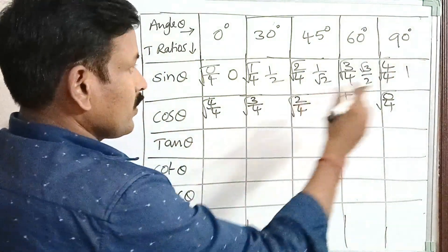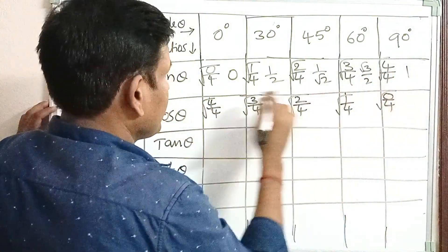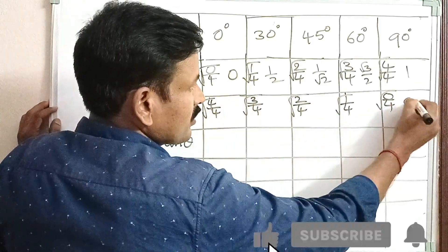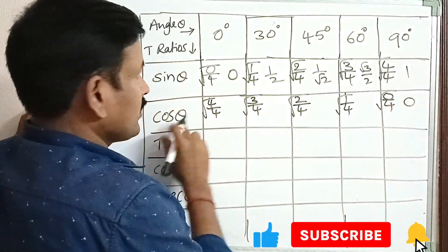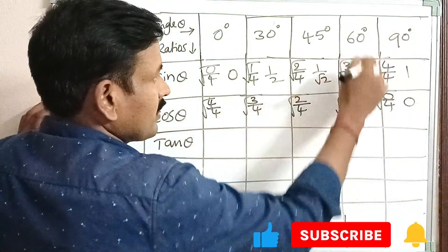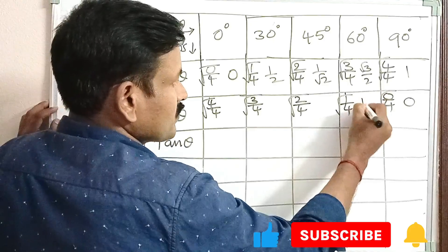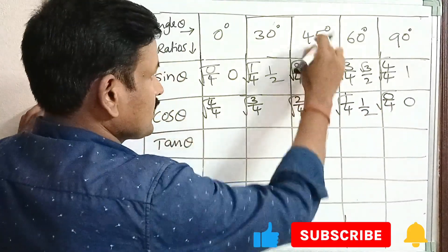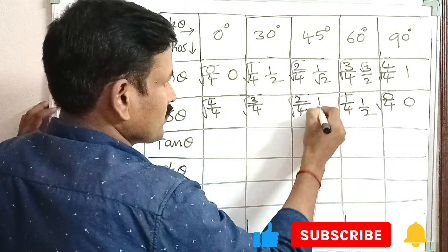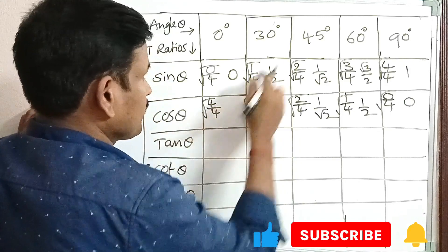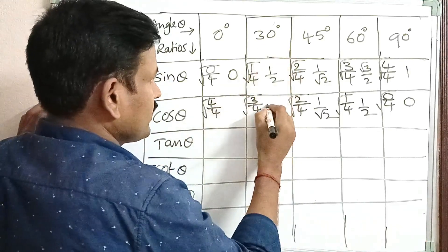Now in the same way, write the cosine values. 0 by 4 is 0, so cos 90 is 0. Cos 60 is 1 by 2. Cos 45 is 1 by root 2. Cos 30 is root 3 by 2.